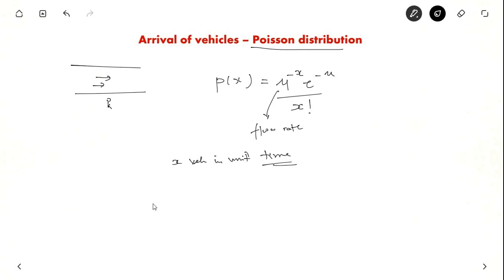This was a question asked in gate examination. Suppose the flow rate is 900 vehicles per hour. What is the probability that the headway is greater than 8 seconds? Which means they are telling that for 8 seconds no vehicle should pass. So here X is 0. So here X is 0. P of 0 is equal to nu into 0 e power minus nu by 0 factorial.